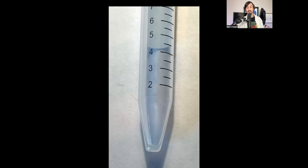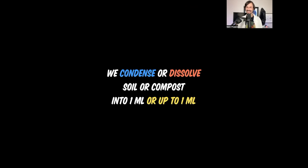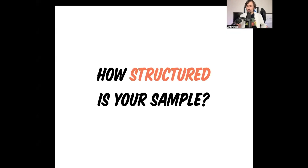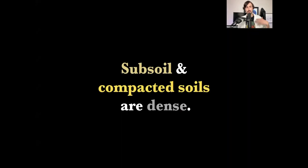When you've got well-structured soil, 50% of your soil can be air. We condense or dissolve soil or compost into that 1 ml. But how structured is your sample? If your sample is highly structured, 50% is air. Subsoils and compacted soils are all dense — you pour that unstructured soil in and it just fills through the line. No tamping needed. No air.